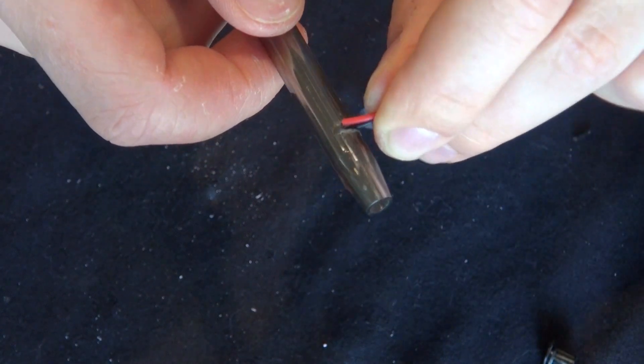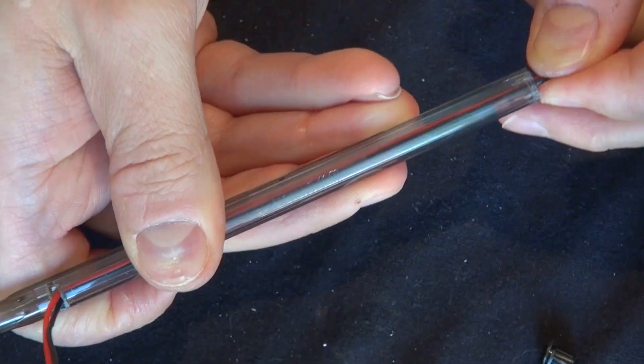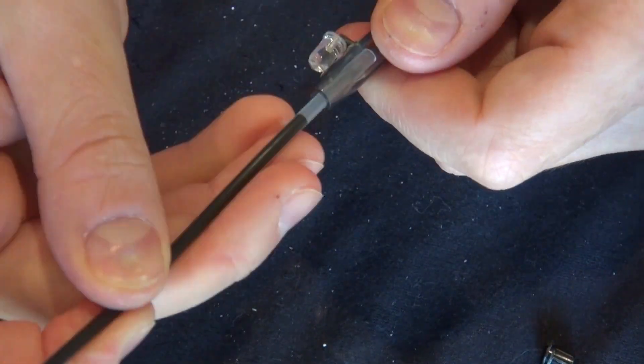Now take your two wires from your LED and slide them through the pen, and then pull them out from the other end so it slips in.